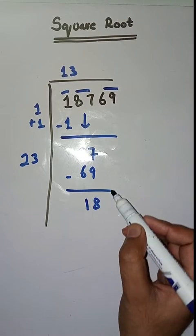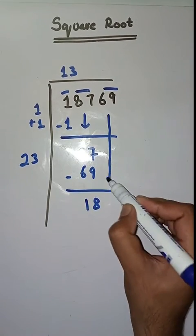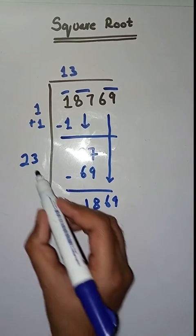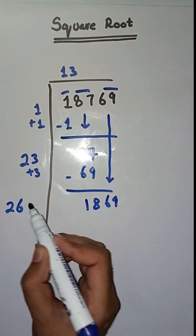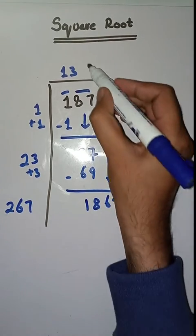Next pair is 69. Isko bhe hum necce liayenge. Yaha bhe hum karenge twenty-three plus three which is equal to twenty-six. So we take a number 7. Two sixty-seven seven one's are 1869.